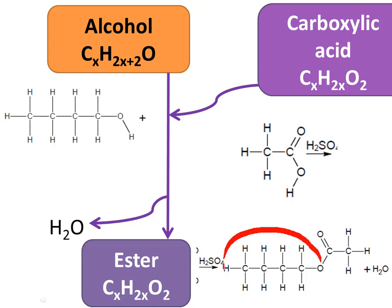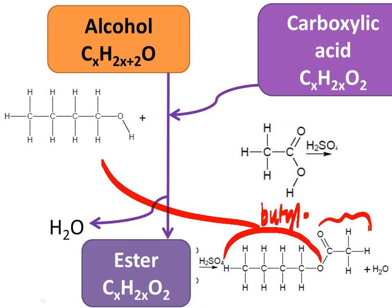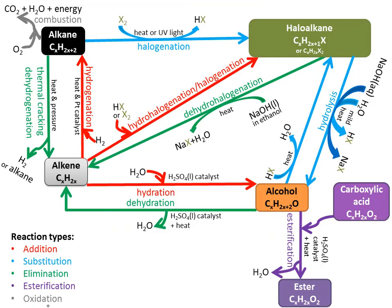The part that used to be the alcohol is now called the alkyl group — that was butan-1-ol, so it's now butyl. The part that used to be the carboxylic acid ends with oate, and it has two carbons, so it's ethanoate. The product is butyl ethanoate plus water — and we call that esterification.